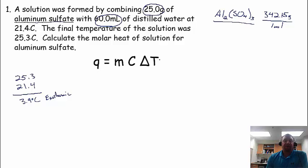Now, what does this equation mean? Q is heat measured in joules. M is mass, and this is important here. This is not only the mass of the aluminum sulfate, but is the mass of the water that you put it in. So I'm going to jot these down, 25.0 grams.